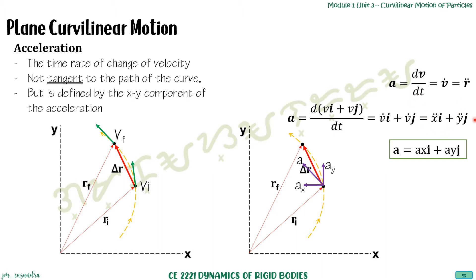Note that i and j are just unit vectors. Average acceleration is simply the change in velocity divided by the change in time. The analysis for curvilinear motion is essentially the same as rectilinear motion.